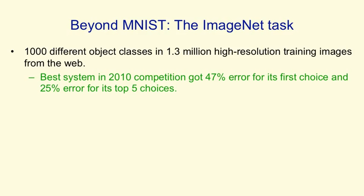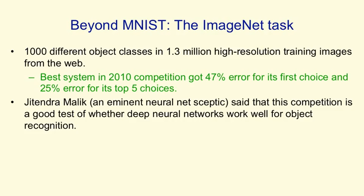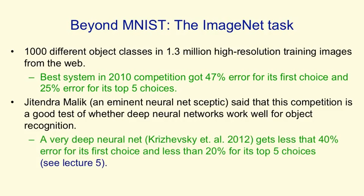Jitendra Malik, who's an eminent neural net skeptic and a leading computer vision researcher, has said that this competition is a good test of whether deep neural networks can work well for object recognition. And a very deep neural network can now do considerably better than the thing that won the competition — it can get less than 40% error for its first choice and less than 20% error for its top five choices. I'll describe that in much more detail in lecture five.